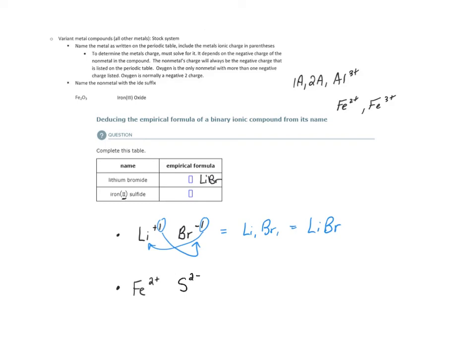So now that I have this, let's use the crisscross method to determine the subscripts of the empirical formula, Fe2, S2.